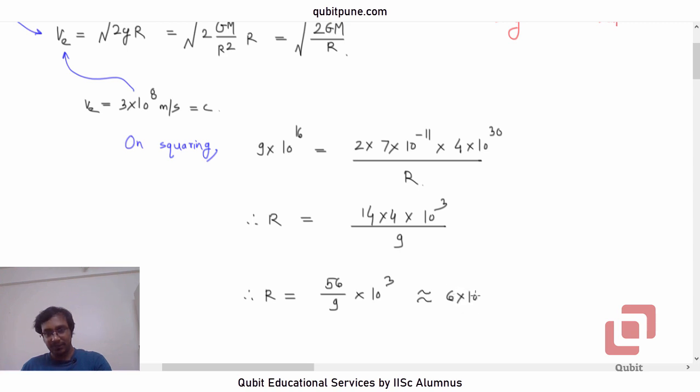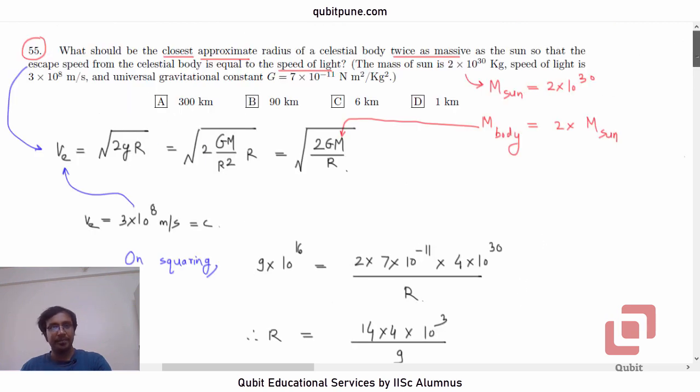56 by 9 is approximately 6, because 9×6 is 54 meters. So 6 kilometers, that is option C, a fairly simple problem.